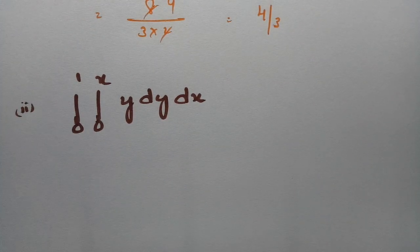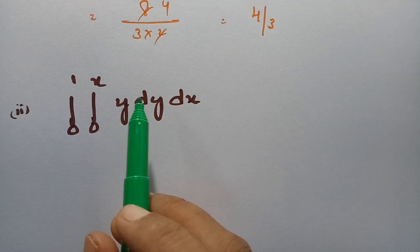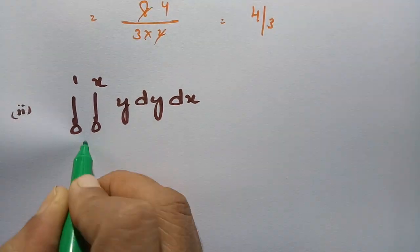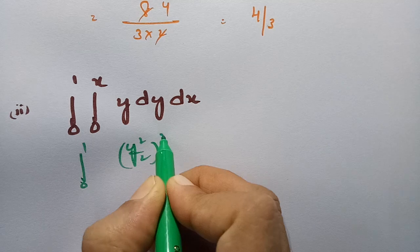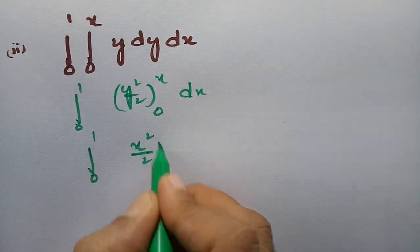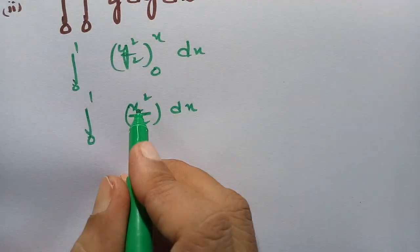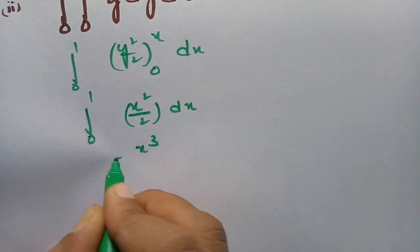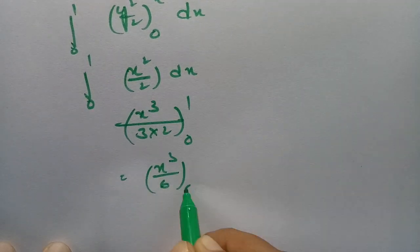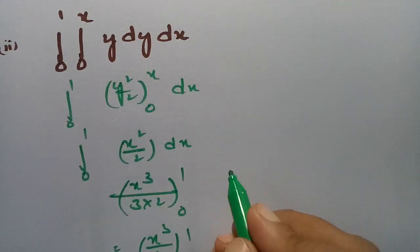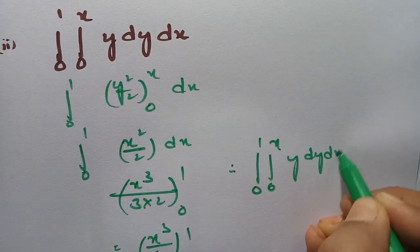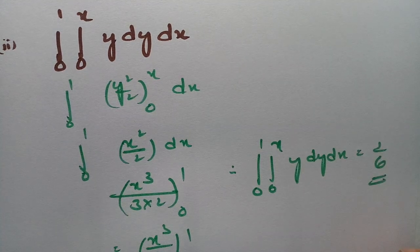Here is another similar problem. First integrate with respect to y: y²/2 between limits 0 to x gives x²/2 dx, with x from 0 to 1. Integrating with respect to x gives x³/6 between 0 to 1, so the answer is 1/6. Therefore the integral from 0 to 1, integral from 0 to x of y dy dx equals 1/6.